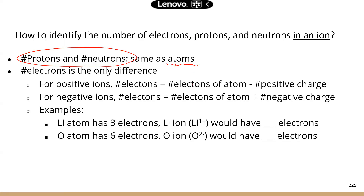How do you determine the number of electrons in an ion? For positive ions, the number of electrons is the number of electrons in the atom minus the positive charge. And for negative ions, it's the number of electrons in the atom plus the number of negative charge.